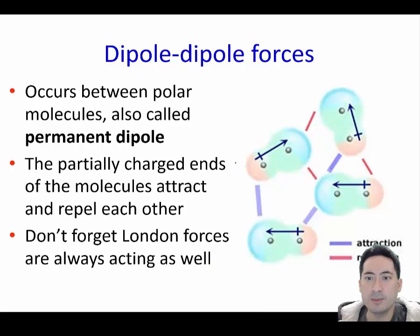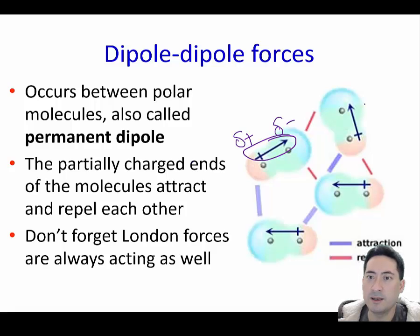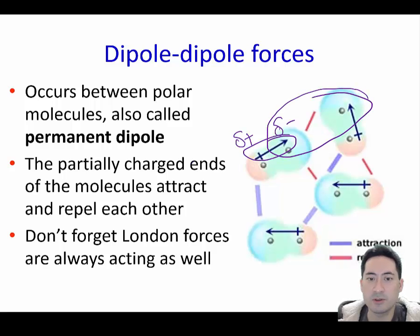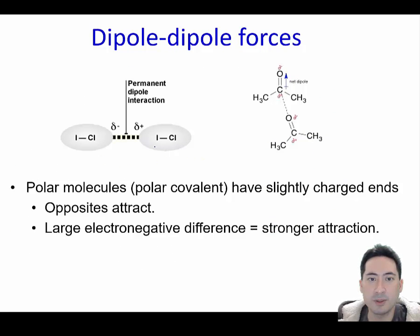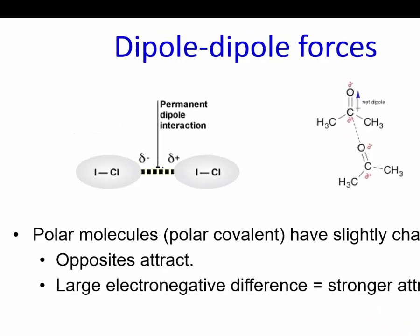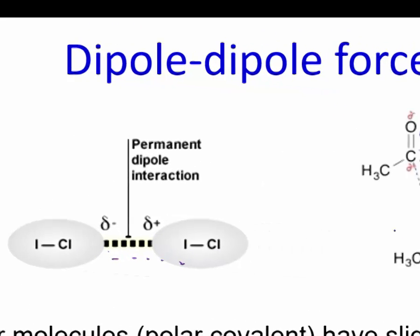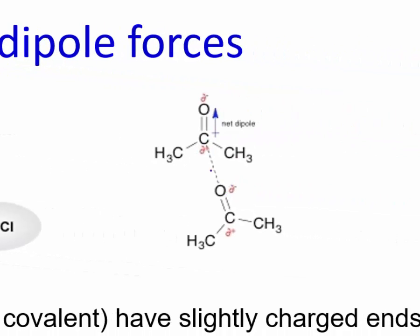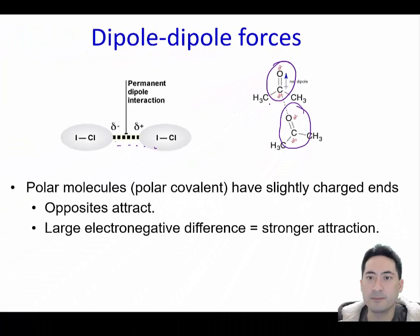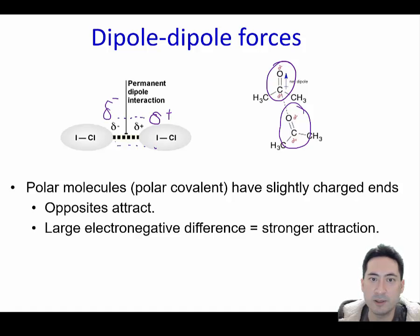The next type involves permanent poles. If you have a polar bond, there'll permanently be a positive end and a negative end, which makes the attractions far more stable and far stronger. Here we have some examples of dipole-dipole: we have chlorine negative and iodine positive, so we draw the dotted line in. Make sure you draw in your delta-positive and delta-negative and the dashed line when you're representing these poles.